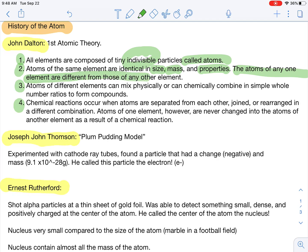And it says atoms of one element are different from the atoms of any other element. That's correct. Different elements have different numbers of protons. Atoms of different elements can mix physically or chemically combined in simple whole number ratios to form compounds. That sounds great.